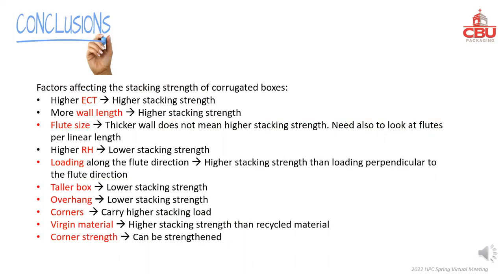In conclusion, this presentation shows the factors that affect box stacking strength and how to increase it with corner strengthening. Higher ECT and longer wall length give higher stacking strength. Higher humidity, taller height, and overhang weaken the box strength. Thicker wall does not mean higher stacking strength — we also need to look at flutes per linear length. Corners carry higher stacking load, so corner strengthening is a good way to increase box stacking strength. Virgin material performs better than recycled material.